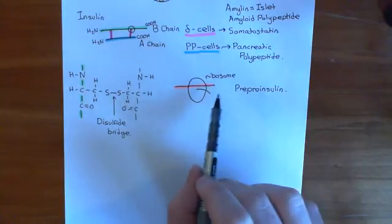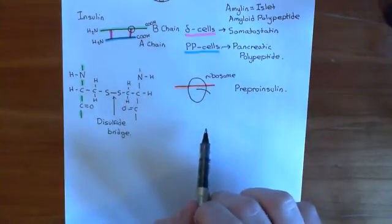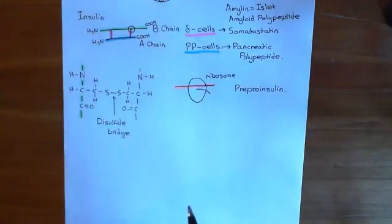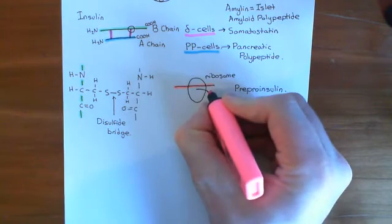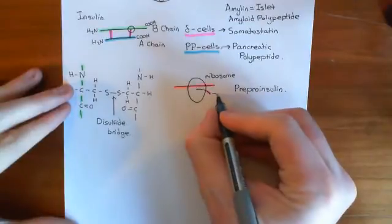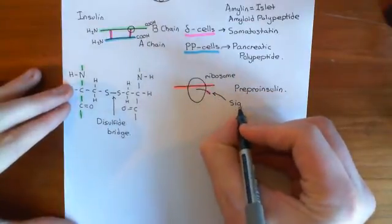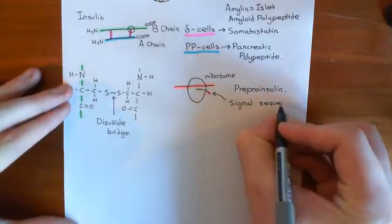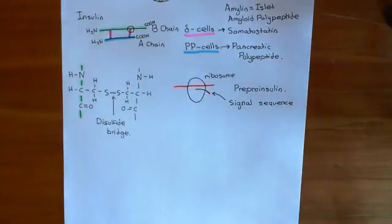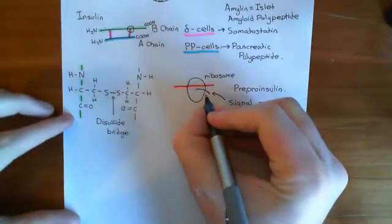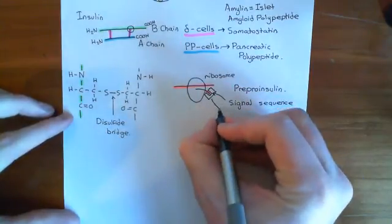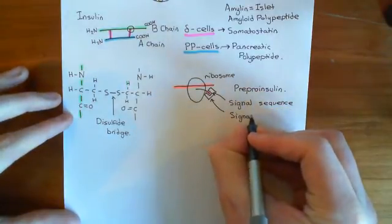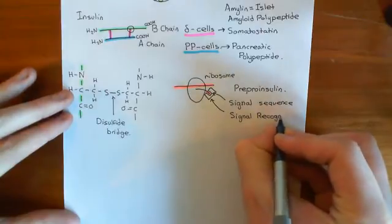Whilst you're still translating the pre-proinsulin, it's going to be targeted into the ER. What tells the cellular machinery to target a protein being translated to the ER membrane is what's known as a signal sequence — right at the amino terminus of the protein, there will be a specific combination of amino acids called a signal sequence. A protein in the cytoplasm will recognize and bind to this signal sequence, and this protein is known as a signal recognition particle, or SRP.